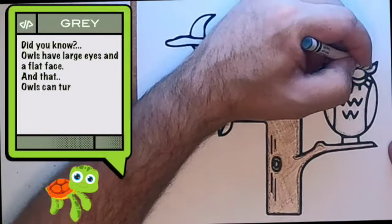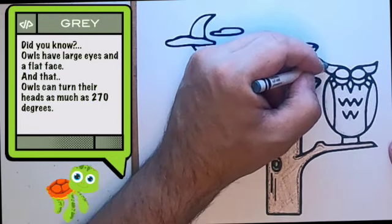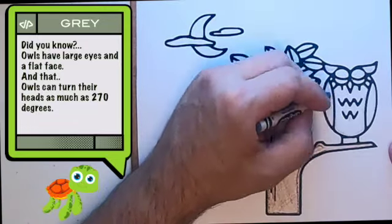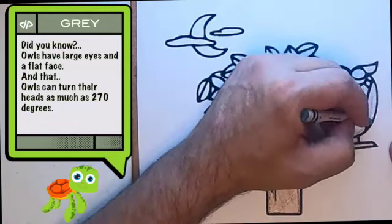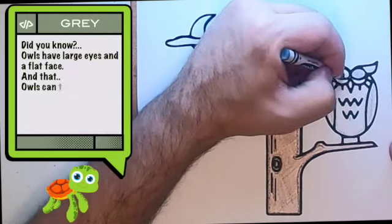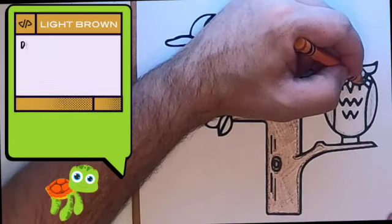Hey, did you know? Owls have large eyes and a flat face, and owls can turn their heads as much as 270 degrees.